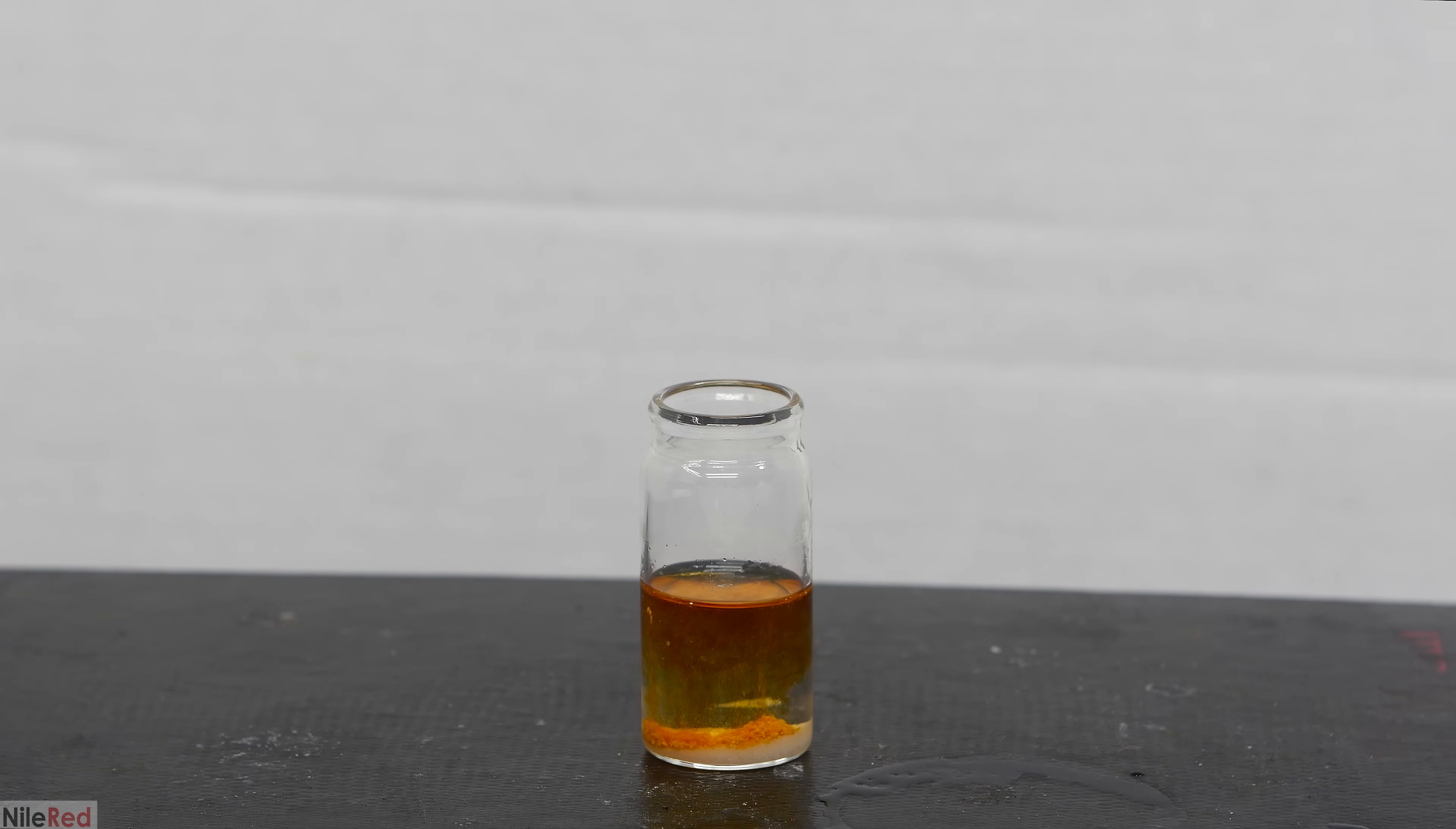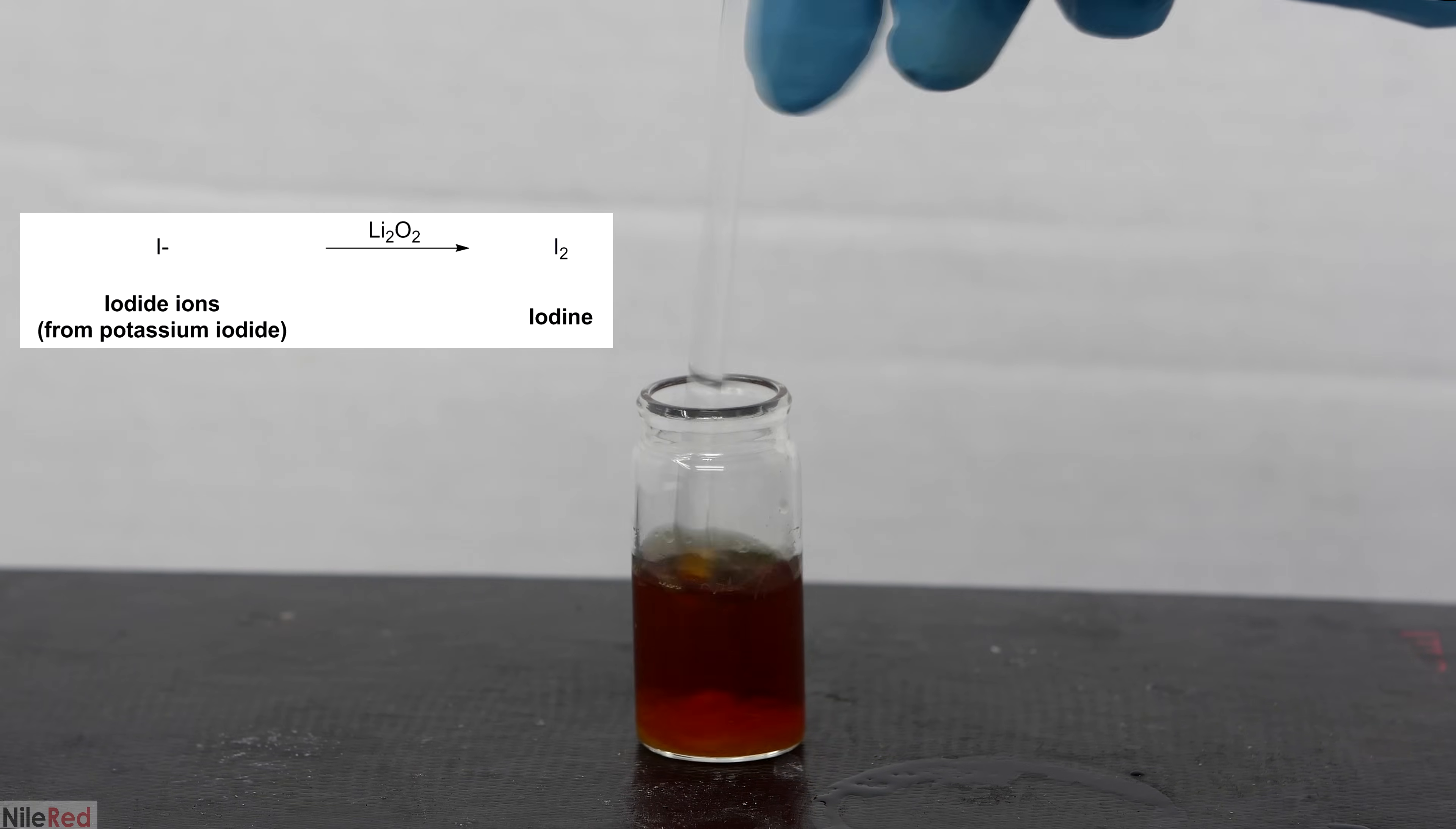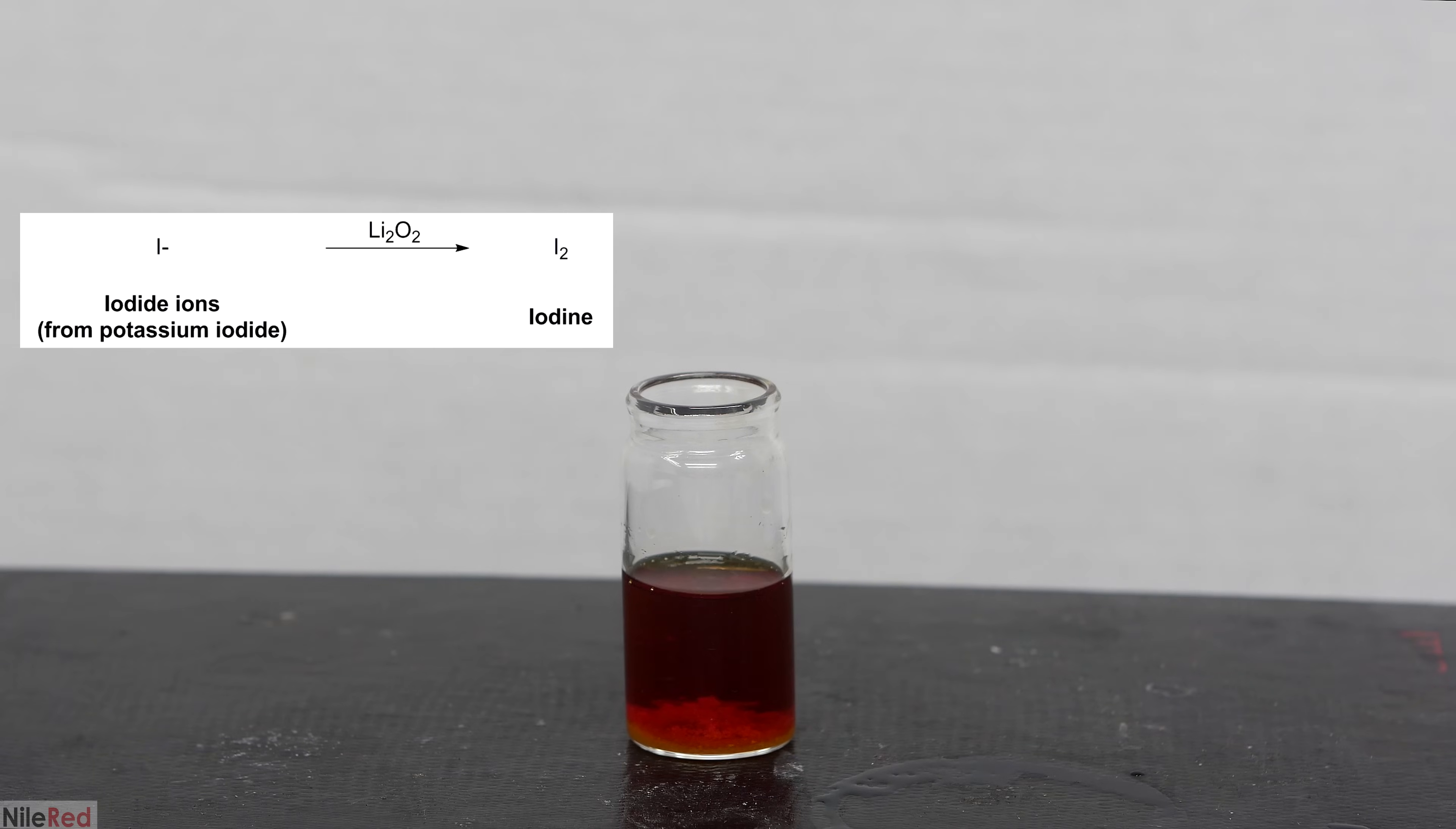When a small amount of the lithium peroxide is dumped in, you can see that immediately it starts to take on an orangey-yellow color. This color change occurs because the peroxide is a strong oxidizer, and it oxidizes the colorless I- ions to colored I2. With this positive result, we can move on and experiment a little with the lithium peroxide.